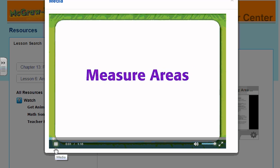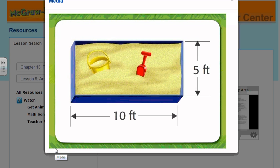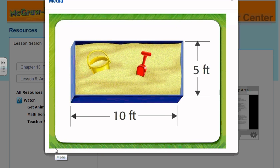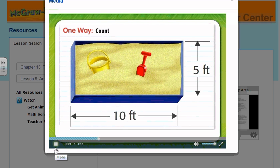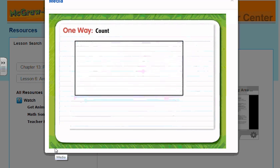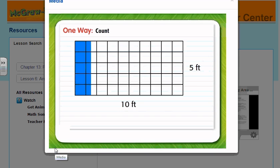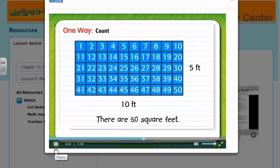Measure areas. The Perez family wants to put this sandbox in their backyard. What is the area of the sandbox? Let's look at two ways for finding the area of the sandbox. One way is to count the square units. Start by drawing an area model of the sandbox. Since the sandbox is 5 feet wide, draw 5 rows. Since the sandbox is 10 feet long, draw 10 columns. Count the number of squares in the area model. There are 50 square feet.